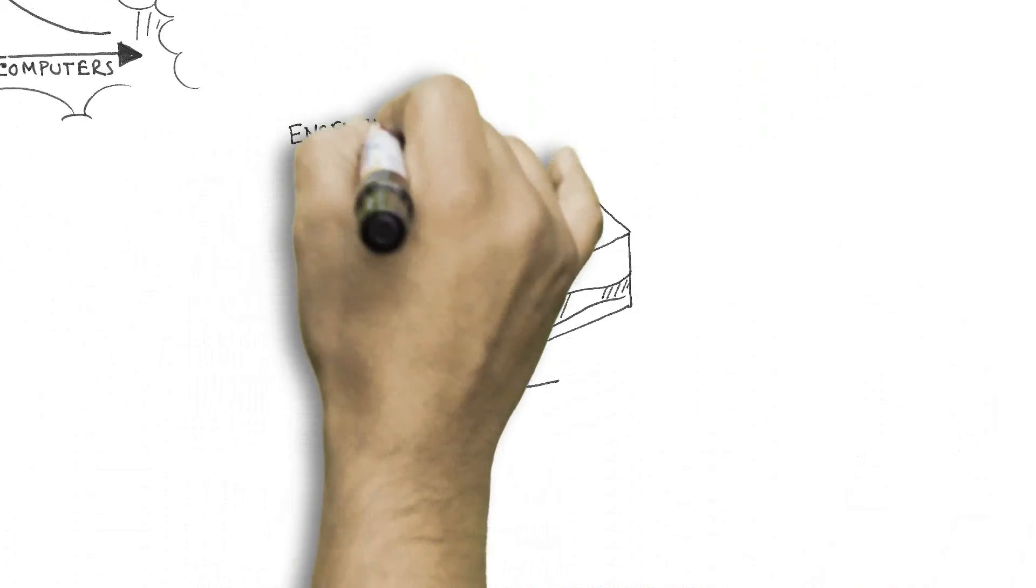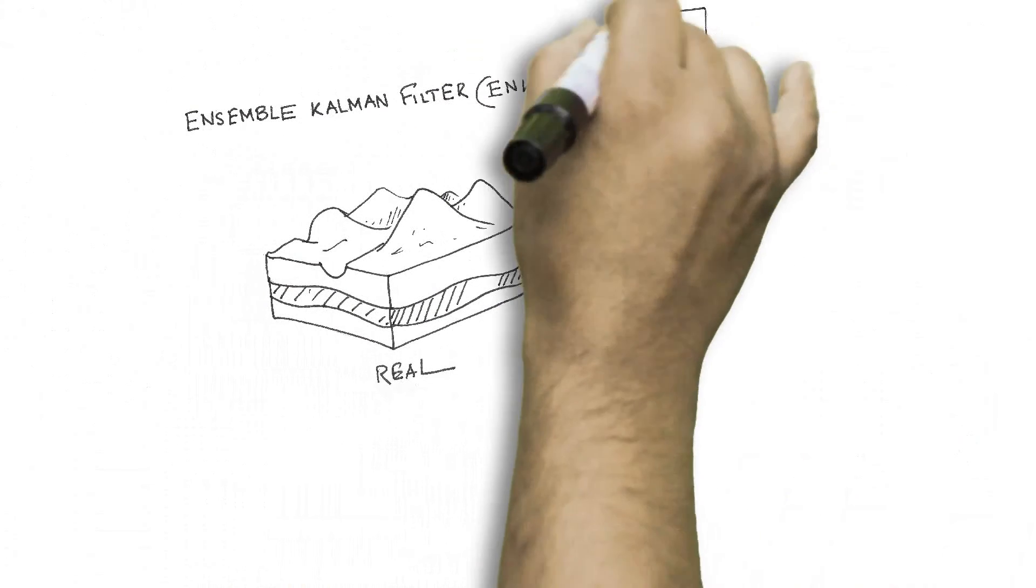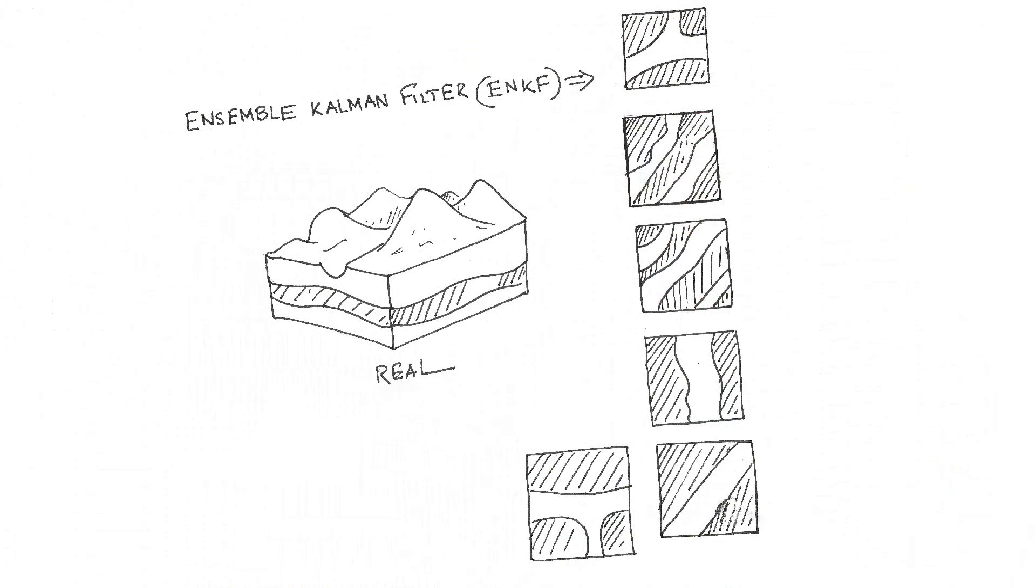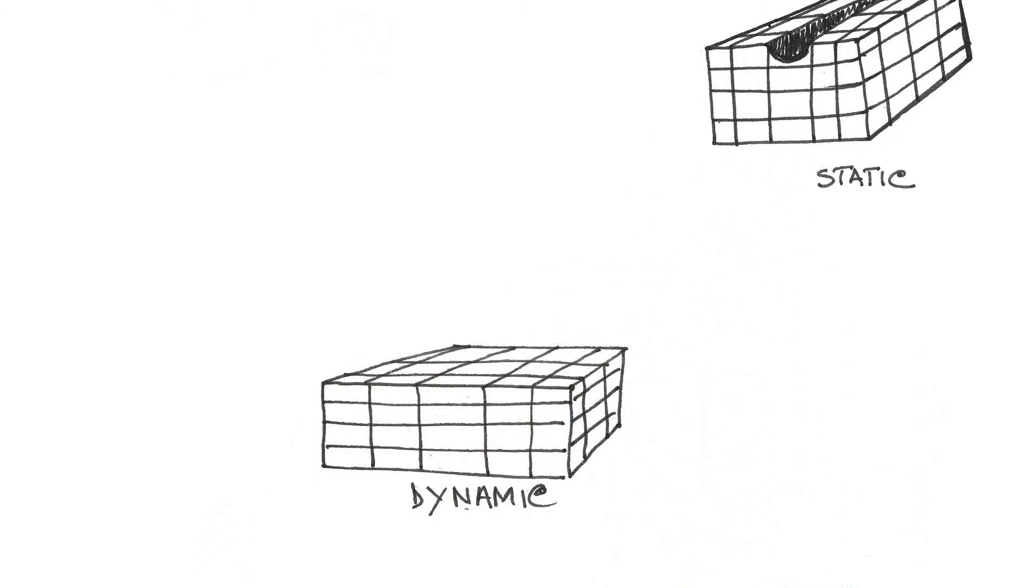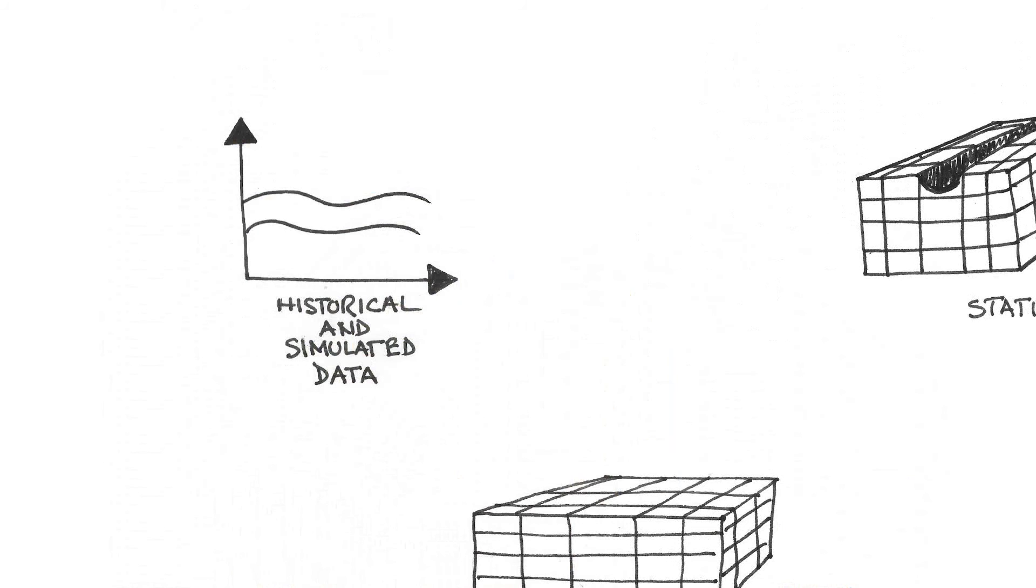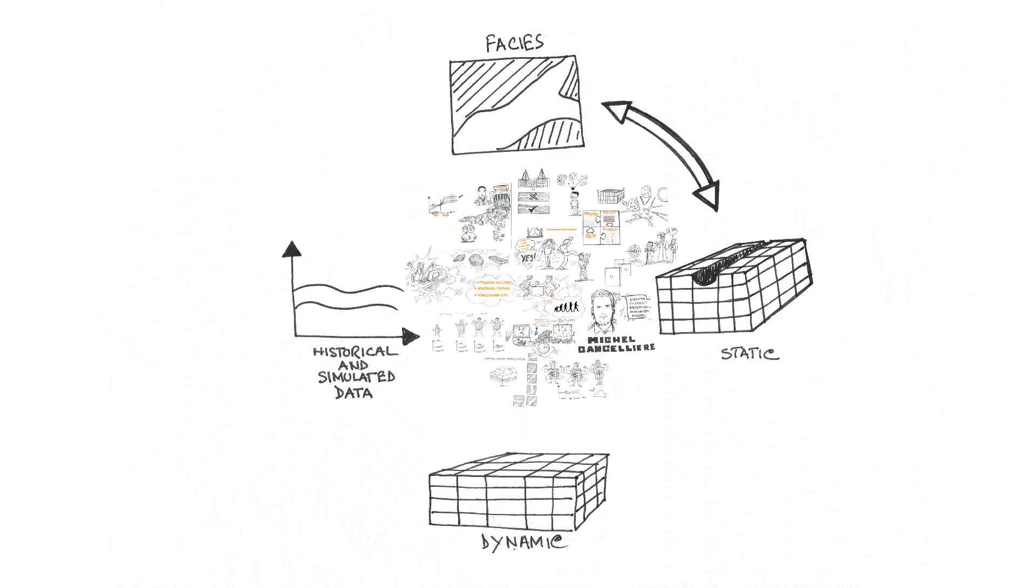I also used an Ensemble Kalman filter for the calibration of different facies realizations, conditioning the channel distribution to production data. This closes the loop between static and dynamic data, reducing model uncertainty, and leads to a more efficient exploitation of hydrocarbon systems.